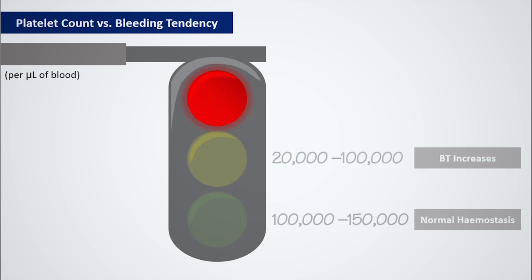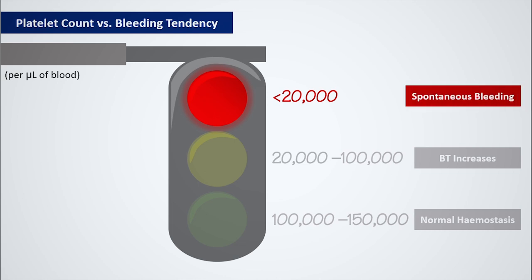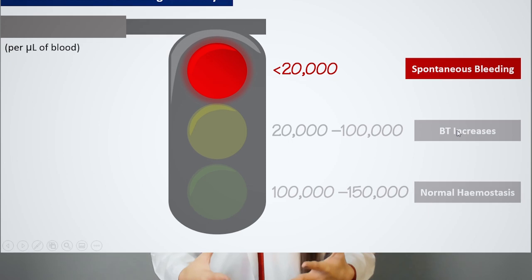The range which is less than 20,000 is red — this is the danger zone. This is where there is risk of spontaneous bleeding from our skin, mucous membranes, into our brain, our pulmonary cavity, and even our retina. You can see how this can even prove to be fatal in extreme cases.